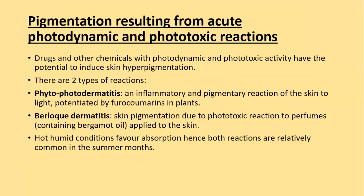Pigmentation can result from acute phototoxic reactions. There are two types: the first is phytophotodermatitis — an inflammatory and pigmentary reaction of skin to light potentiated by furocoumarins in plants. The second is berloque dermatitis — a skin pigmentation due to phototoxic reaction to perfumes containing bergamot oil, which when applied on the skin results in a phototoxic reaction leading to hyperpigmentation.